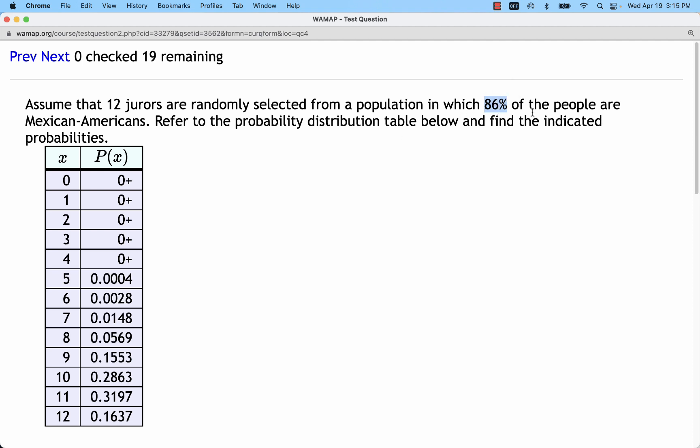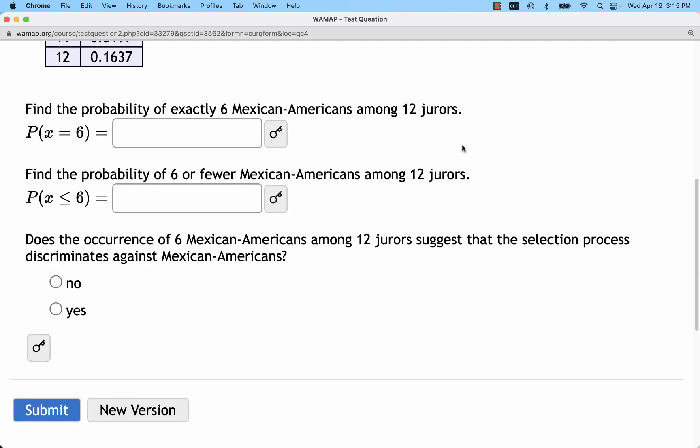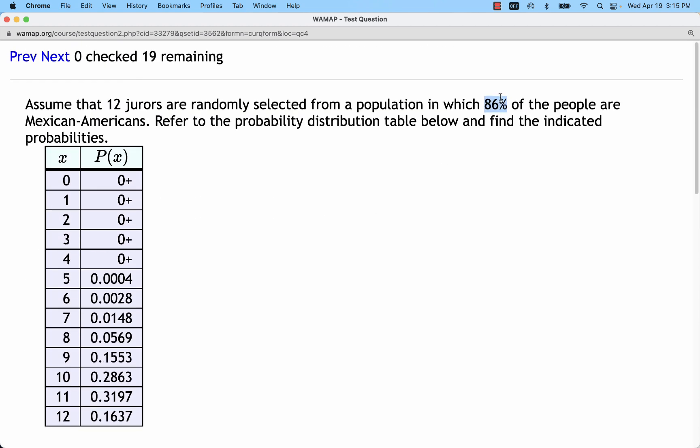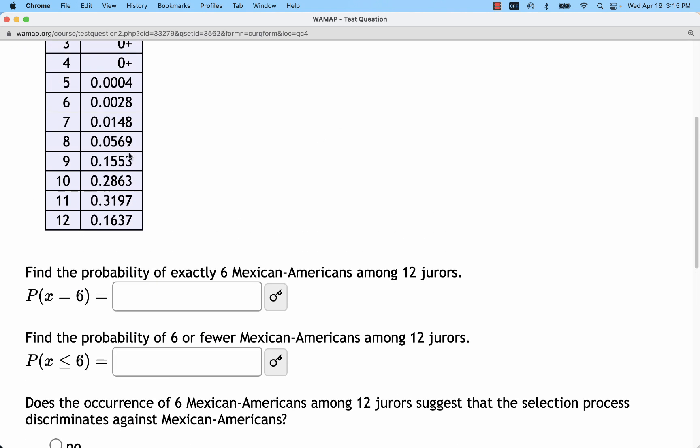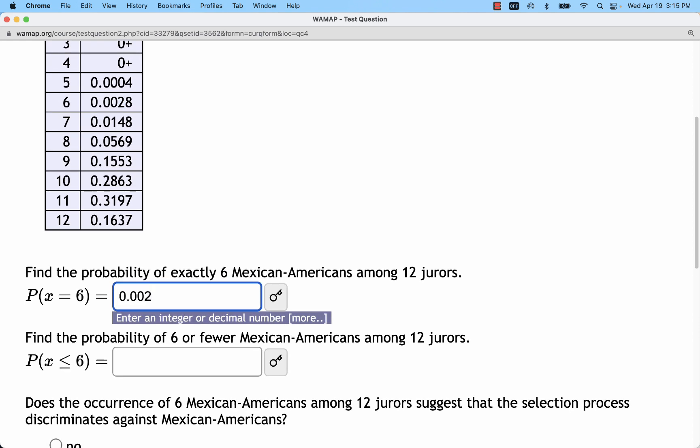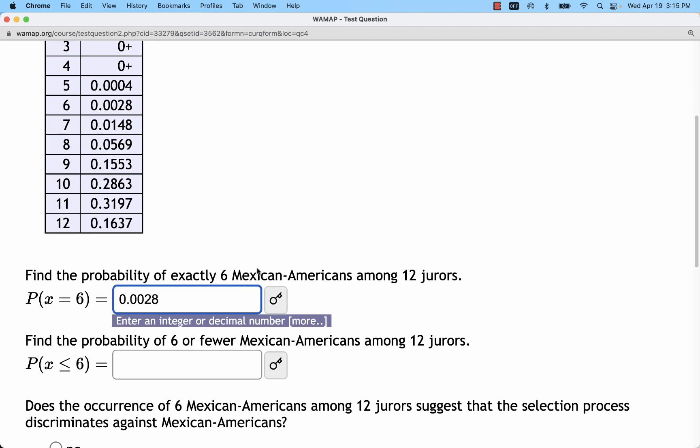Now we do expect to see variation from that because of sampling. You get variation in sampling. But would we expect to get variation as much as we have from 86% down to 50%? So the way we do that is we examine probabilities. Landing right on 6 is a pretty low probability. That's the 0.0028 or 0.28%.